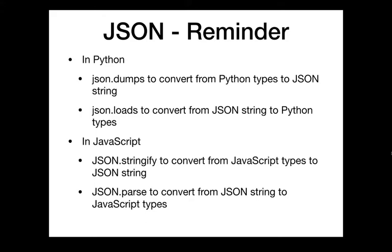In Python: JSON.dumps and JSON.loads — the 'S' for string — to convert to and from JSON. In JavaScript: stringify and parse — stringify converts an object to a JSON string, and parse takes a JSON string and represents it as JavaScript types: objects, arrays, etc. This was really easy in CS115 because these methods did all the work.